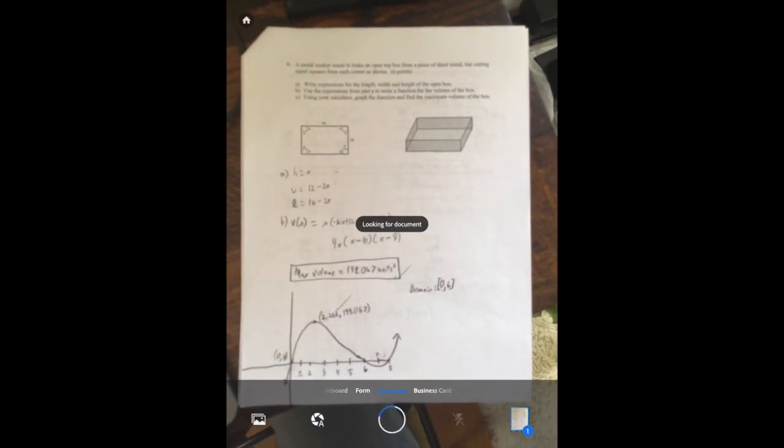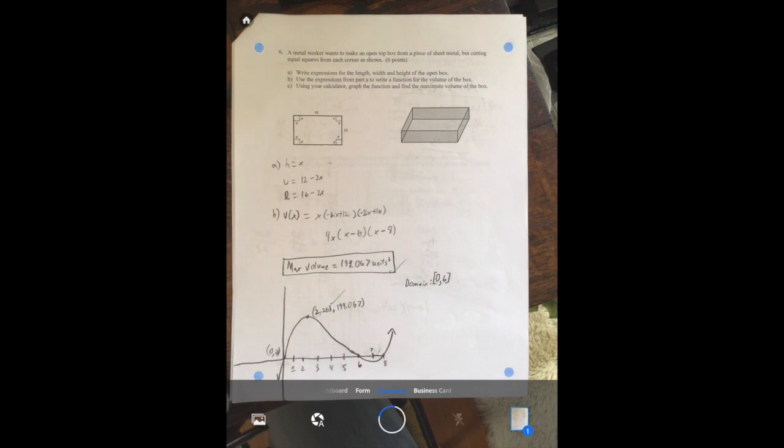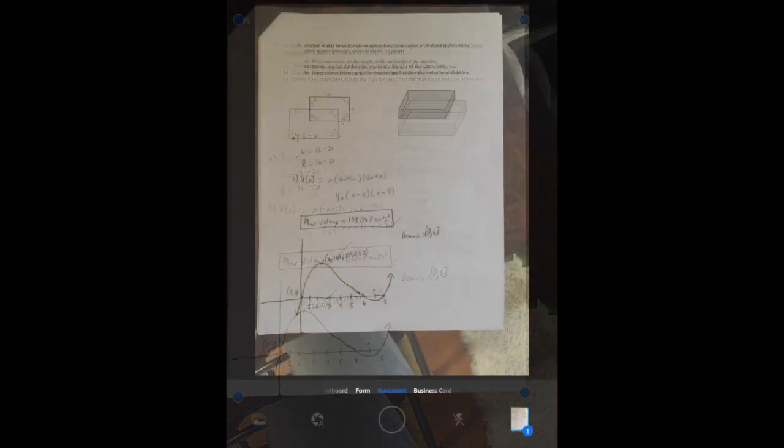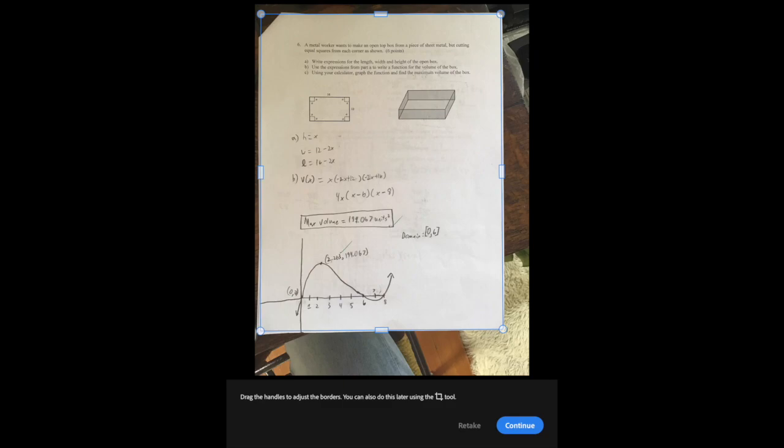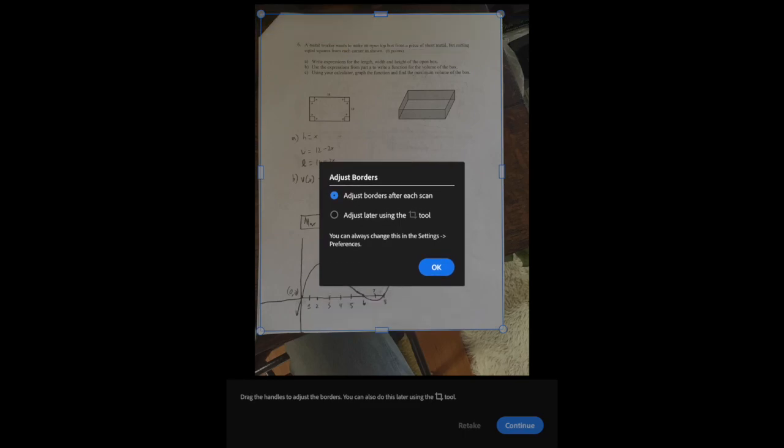Now I've flipped over the page. I'm going to hold it above. And you can see it says looking for document. And then bam, it took a picture without me even pressing anything. And then noticed where the document was again. And that looks good to me. So I'm going to hit continue again. In this one, I just keep it pretty simple. I say adjust borders after each scan.